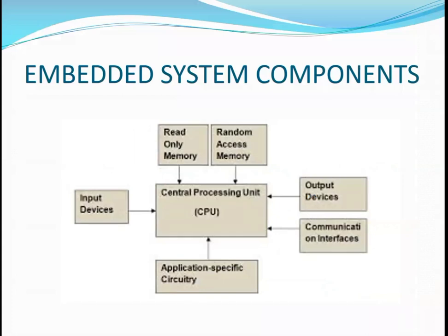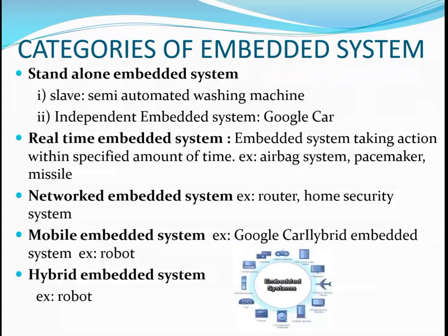The components of an embedded system: first, the CPU is the brain of an embedded system; it controls all sensors and actuators to perform specific tasks. Memory includes ROM and RAM for data storage. Input and output devices provide interaction between hardware and software. Communication interfaces connect one microcontroller to another for data transmission, and the circuit depends on the specific application.